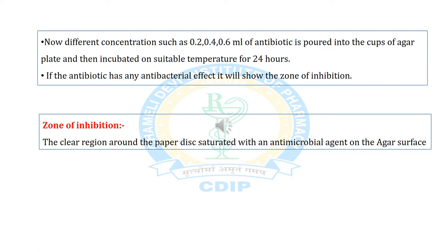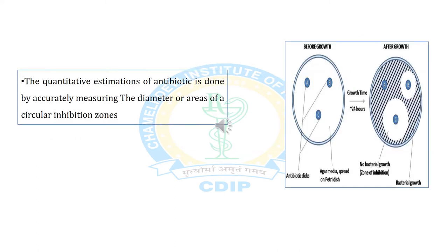What is the zone of inhibition? It is the clear region around the paper disc saturated with an antimicrobial agent on the agar surface. The quantitative estimation of antibiotics is done by accurately measuring the diameter or area of the circular inhibition zones in the agar plate.